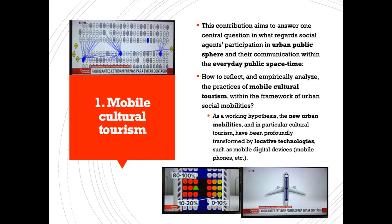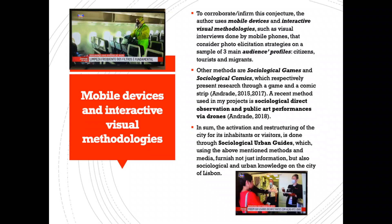One: mobile cultural tourism. This contribution aims to answer one central question regarding social agents' participation in urban public sphere, and their communication within everyday public space-time — how to reflect and empirically analyze the practices of mobile cultural tourism within the framework of urban social mobilities. As a working hypothesis, the new urban mobilities, and in particular cultural tourism, have been profoundly transformed by locative technologies such as mobile digital devices and mobile phones.